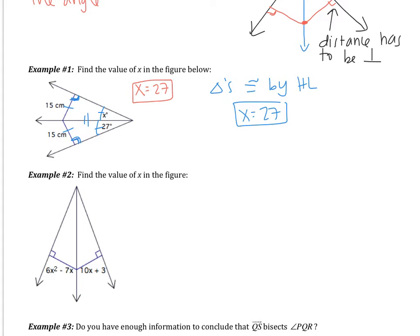Example two says find the value of x in the figure. Mark those angles congruent — I'm telling you that those angles are congruent. Now we want to find the value of x. The reason those angles are congruent is because we have an angle bisector. Using the theorem: any point on the angle bisector will be equidistant from the two sides, which tells us this distance is congruent to that distance. Remember that the distances must have a right angle. That tells us that 6x² − 7x = 10x + 3.